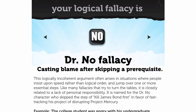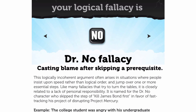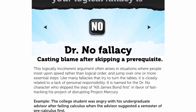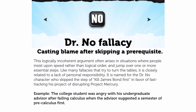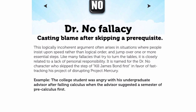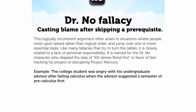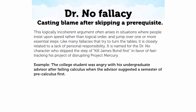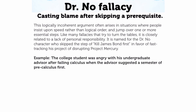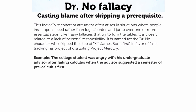Interesting. This logically incoherent argument often arises in situations where people insist upon speed rather than logical order and jump over one or more essential steps. Like many fallacies that try to turn the tables, it is closely related to a lack of personal responsibility. It is named for the Dr. No character who skipped the step of killing James Bond first in favor of fast-tracking his project of disrupting Project Mercury.